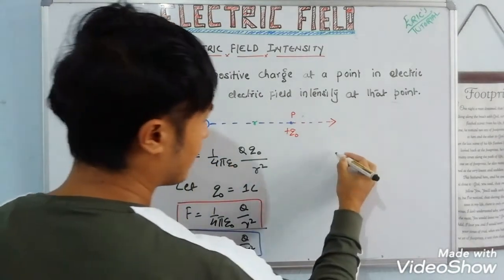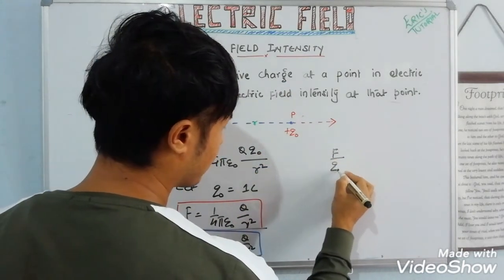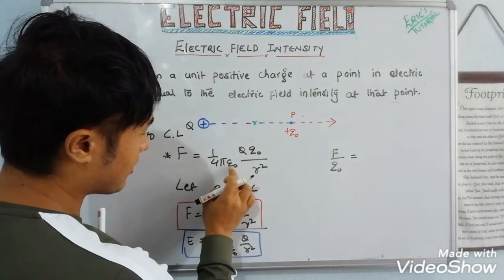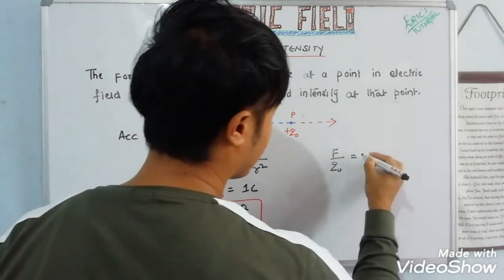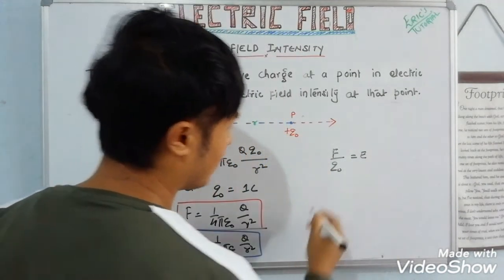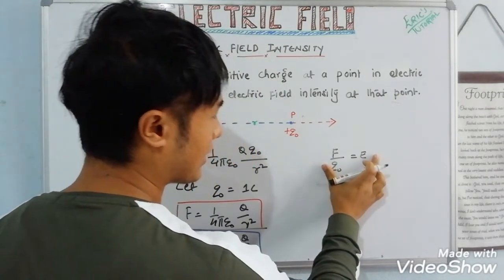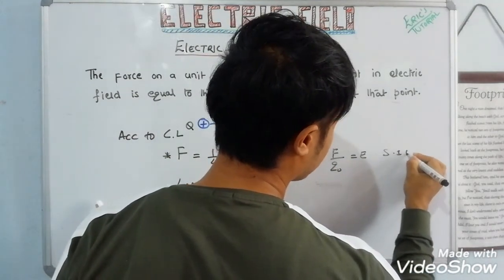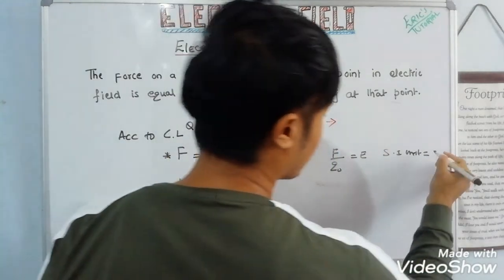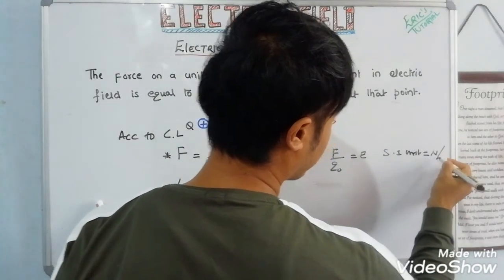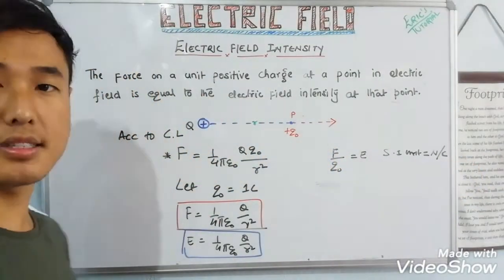From this equation, if we substitute q₀ = 1, we get E = (1 / 4πε₀) × q / r². We can also write E = F / q₀. The SI unit of electric field intensity is force divided by charge, which gives us Newton per Coulomb (N/C).